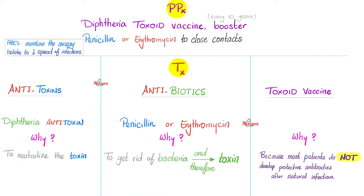For prophylaxis: use the diphtheria toxoid vaccine with a booster every 10 years for the vulnerable population. If you had close contact with a person with diphtheria, you need to take penicillin or erythromycin to prevent the development of diphtheria.